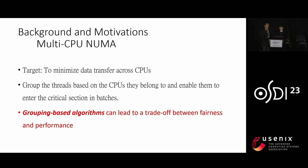For traditional NUMA systems, researchers consider a system with multiple CPUs. The target was to minimize inter-CPU data transfer. Researchers recognized that the inter-core data transfer speed is typically higher than that of inter-CPU data. Therefore, the primary optimization goal was to minimize data transfer across CPU sockets. To achieve this, they explored group-based algorithms. However, this algorithm often presented a tradeoff between fairness and performance.